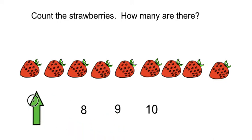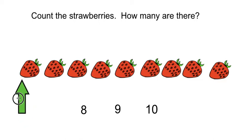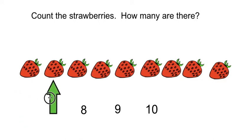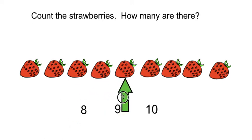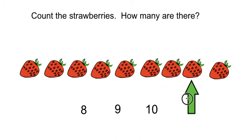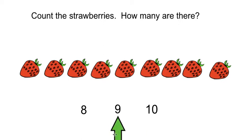Alright, let's double check to make sure we counted the correct amount. Let's count. Ready? 1, 2, 3, 4, 5, 6, 7, 8, 9. There are 9 strawberries.